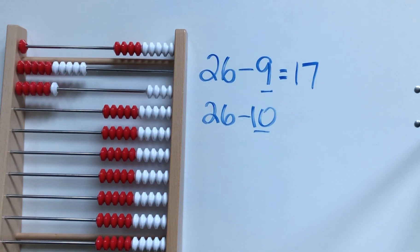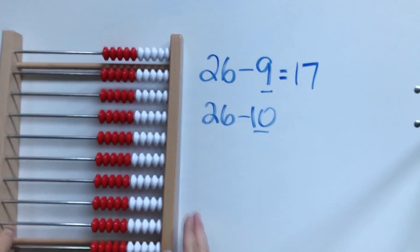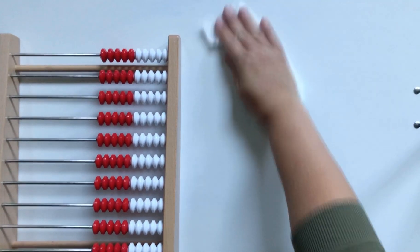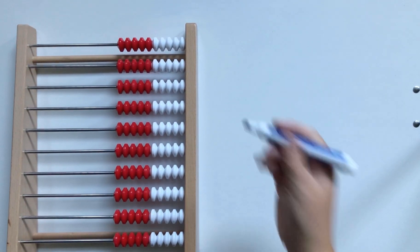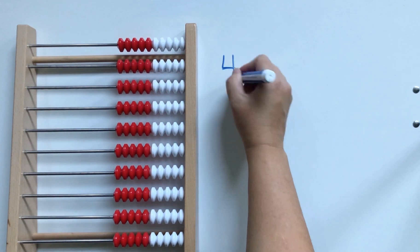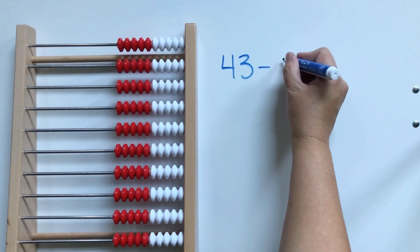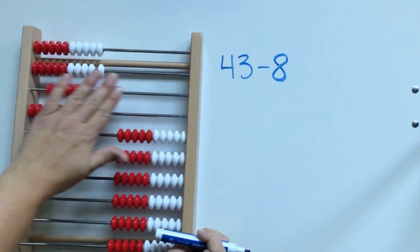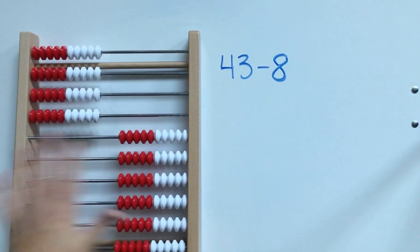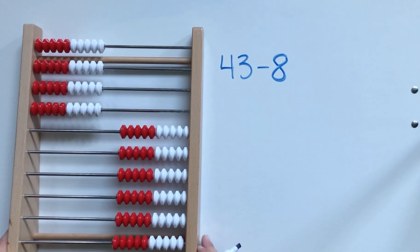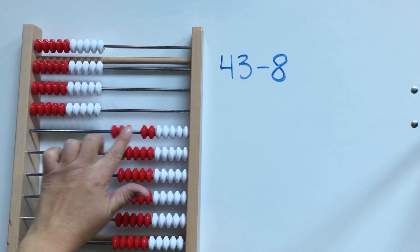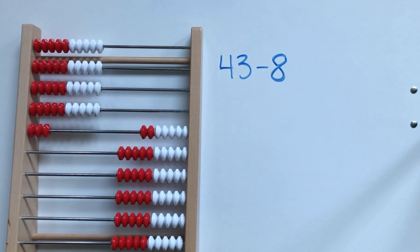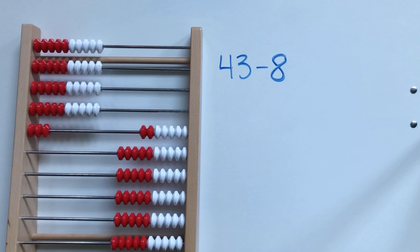Let's try one more. Let's try 43 subtract 8. So we'll show our 43 on our rekenrek. Ten frames are another way that you could show this strategy in a concrete way. So there's 43.